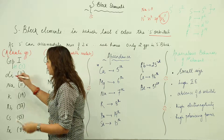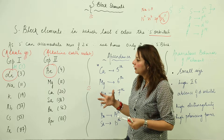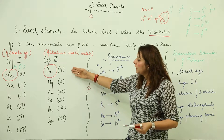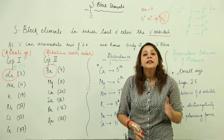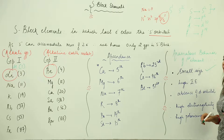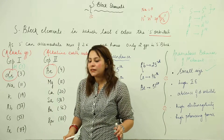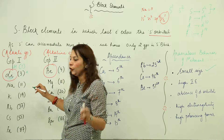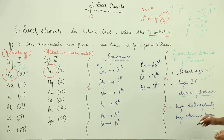In Group 1, the first member is lithium, and in Group 2, the first member is beryllium. When we compare the properties of lithium with the rest of its group members, or beryllium with the rest of its group members, they show anomalous properties — differing significantly from the other family members. The reason is that as the first member, they have the smallest size. As we move down the group, size increases, so lithium is the smallest in Group 1 and beryllium is the smallest in Group 2. Due to their small size, the nuclear charge is high and greater energy is required to extract an electron, so they possess high ionization energy.